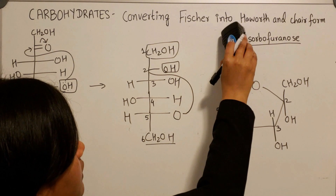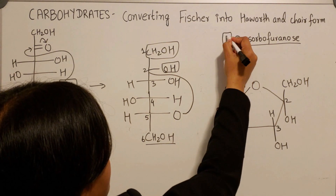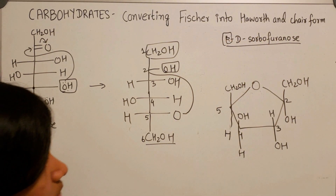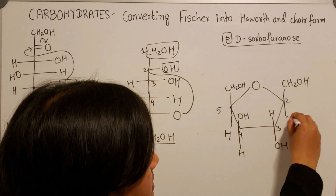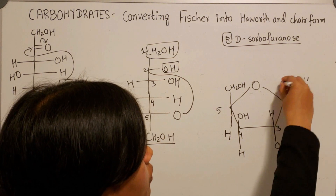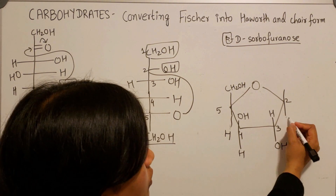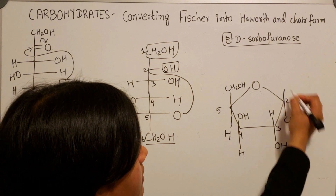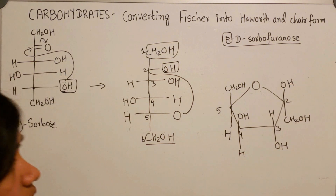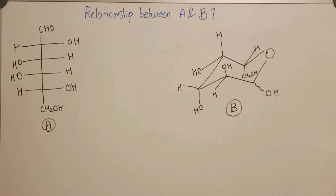For beta-D-sorbofuranose, you just reverse the placement of these two substituents: CH2OH group goes on the bottom and the OH group goes on top. That completes the answer to this question.